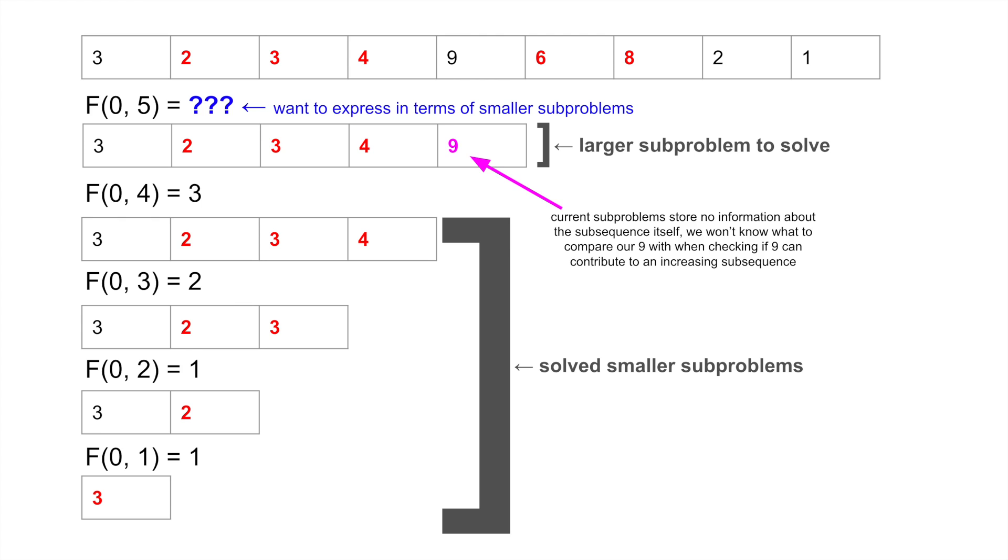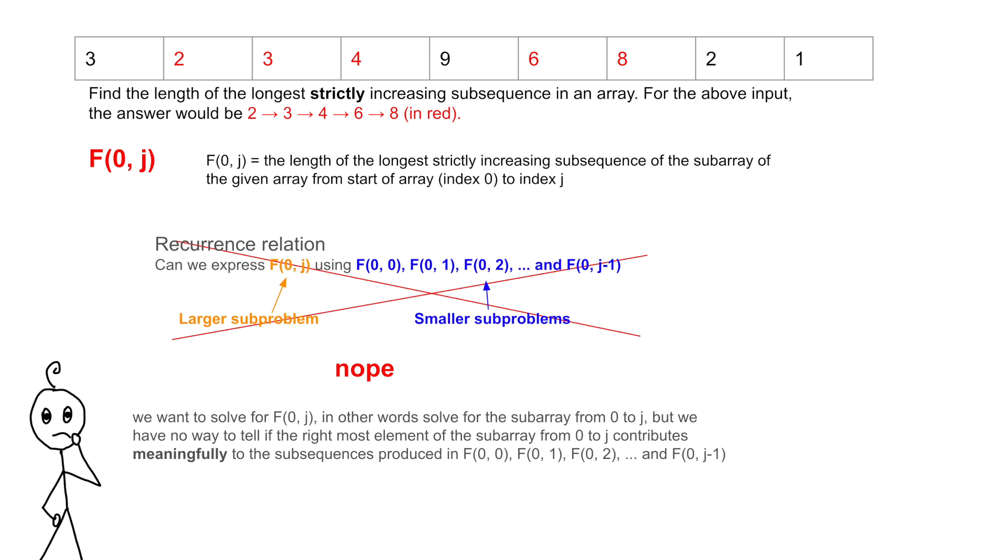Turns out we can't, because we don't know how the next value 9 compares with the largest value of the sub-sequence in the smaller evaluations. We'd want to compare 9 with 4, 3, 2, and 3, but we have no way of knowing to compare with these values if all we store are the following sub-problems. For all our computer knows, the sub-sequence could be the first x-elements of the sub-array, it could be the last x-elements, it could be anything. Therefore we need a new sub-problem.